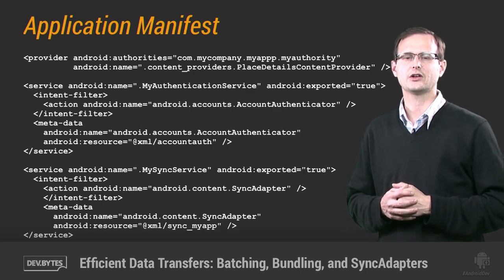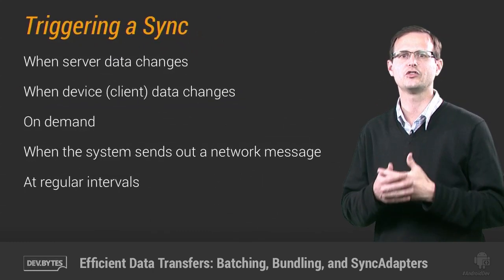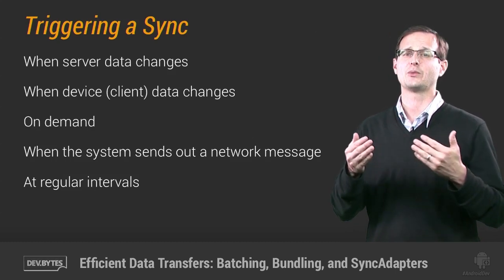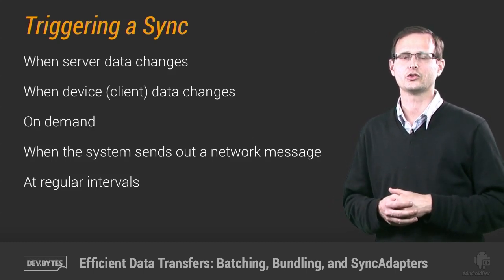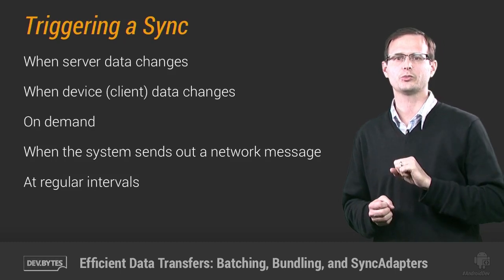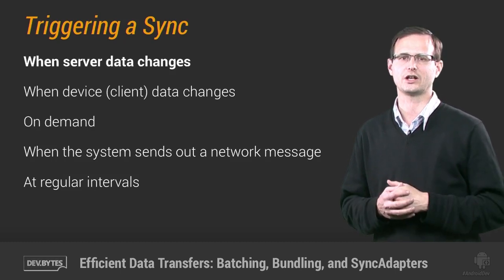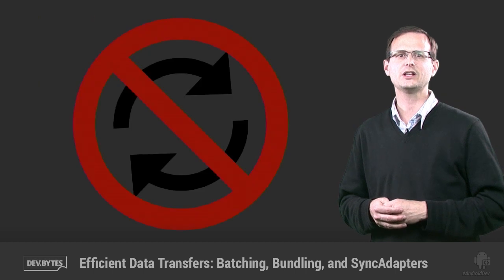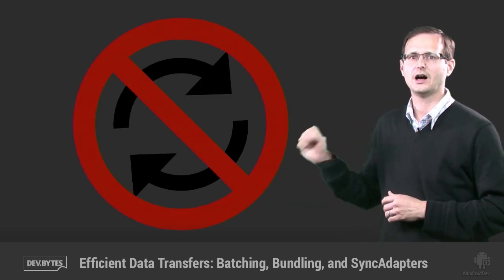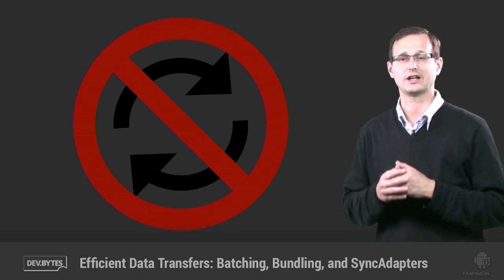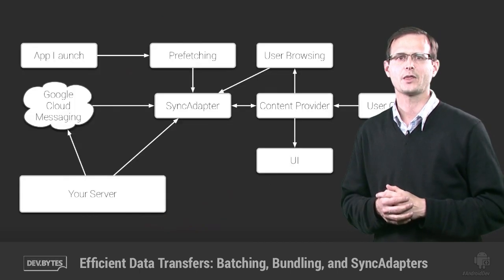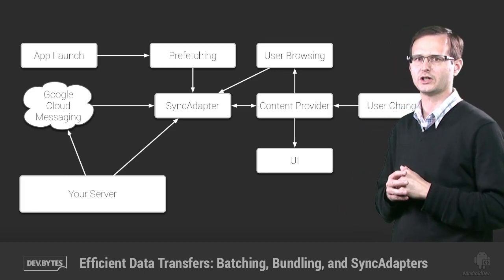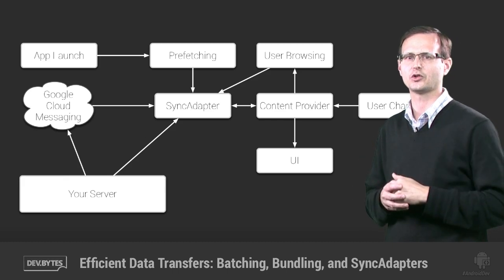With your sync adapter complete, you can now start thinking about how to trigger your synchronizations. You can configure your sync adapter to run when server data changes, when the data on the device changes, when the framework sends a network tickle, at predetermined intervals, or even on demand. To be as efficient as possible, it's best practice to rely primarily on server-initiated synchronizations and, where possible, avoid starting syncs as the direct result of a user action — basically, try to eliminate the refresh button. This flowchart gives an indication of the most common initiators for possible syncs, and I'll go through each flow now, demonstrating how to trigger a sync adapter in each case.